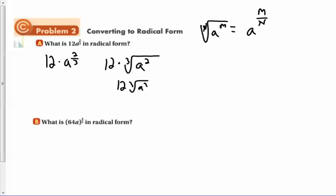What is 64a to the 4/5 in radical form? Now this one, you're going to go 64 to the 4/5 power, and a to the 4/5 power, which really means the 5th root of 64a to the 4th. So pause the video for problem number 2 and see if you got it.